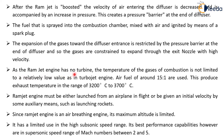As the Ramjet engine has no turbine, the temperature of the combustion gases is not limited to a relatively low value as in a turbojet engine. An air-fuel ratio of around 15:1 is used. This produces exhaust temperatures in the range of 3200°C to 3700°C. The Ramjet engine must be either launched from an airplane in flight or given an initial velocity by some auxiliary means such as launching rockets.